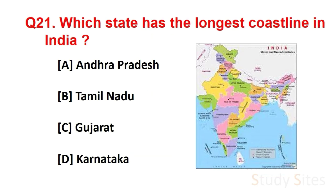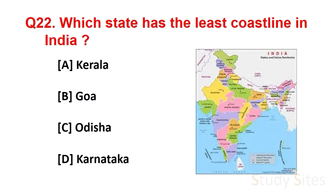Question number 21. Which state has the longest coastline in India? Answer is Gujarat. Question number 22. Which state has the least coastline in India? Answer is Goa.